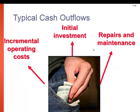Let's get some basic definitions out of the way. Cash outflows refers to money that is coming out of our pockets, and these items would be for things such as incremental operating costs, initial investments, repairs and maintenance — anything where the cash is flowing out, out of our pocket.